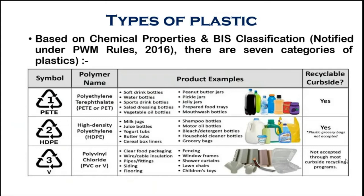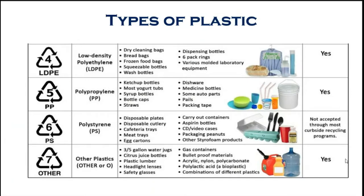The third category is polyvinyl chloride (PVC), used mainly for pipes, food packaging, wire and cable insulation, pipe fittings, lawn chairs, and children's toys — all made of PVC. The fourth category is low-density polyethylene (LDPE), used for dry cleaning bags, bread bags, and frozen food bags.